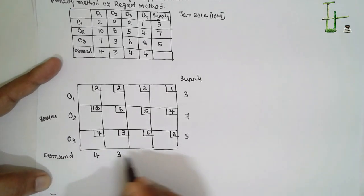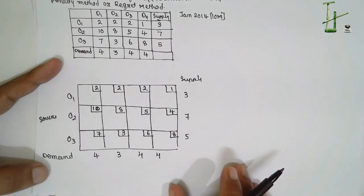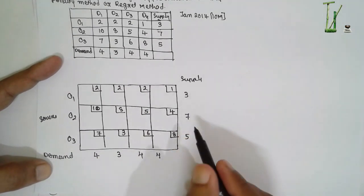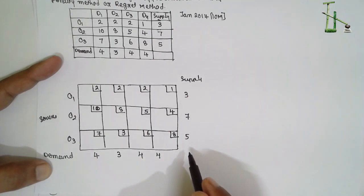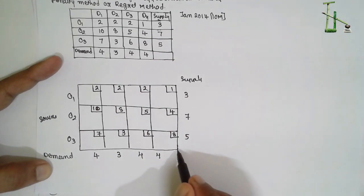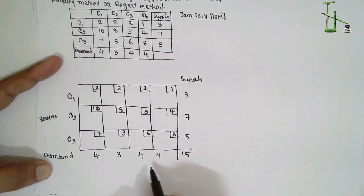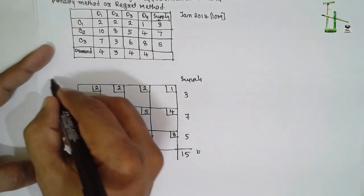The demand values are 4, 3, 4, and 4. First we are going to check whether the system is balanced. Supply: 3 + 7 + 5 = 15. Demand: 4 + 3 + 4 + 4 = 15. The system is balanced — it is a balanced system.